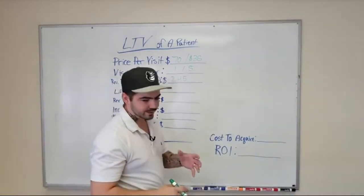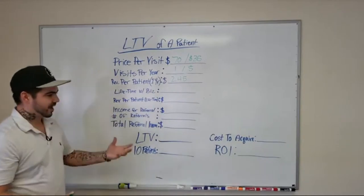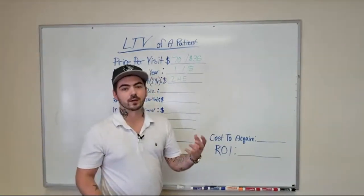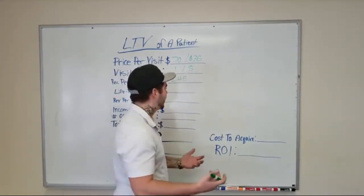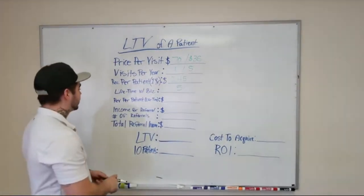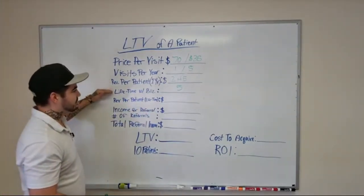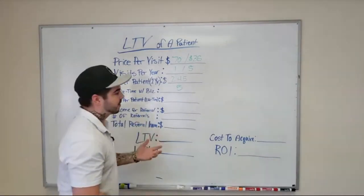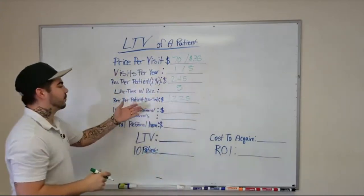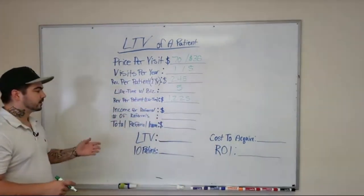For lifetime with a business: the average person stays in the city they're living in for around five years, so I'm going to use that as my example. I was with my last chiropractor for around five years. So the lifetime with the business is five years, meaning the revenue per patient for a lifetime is $245 times five years, which gives us $1,225.